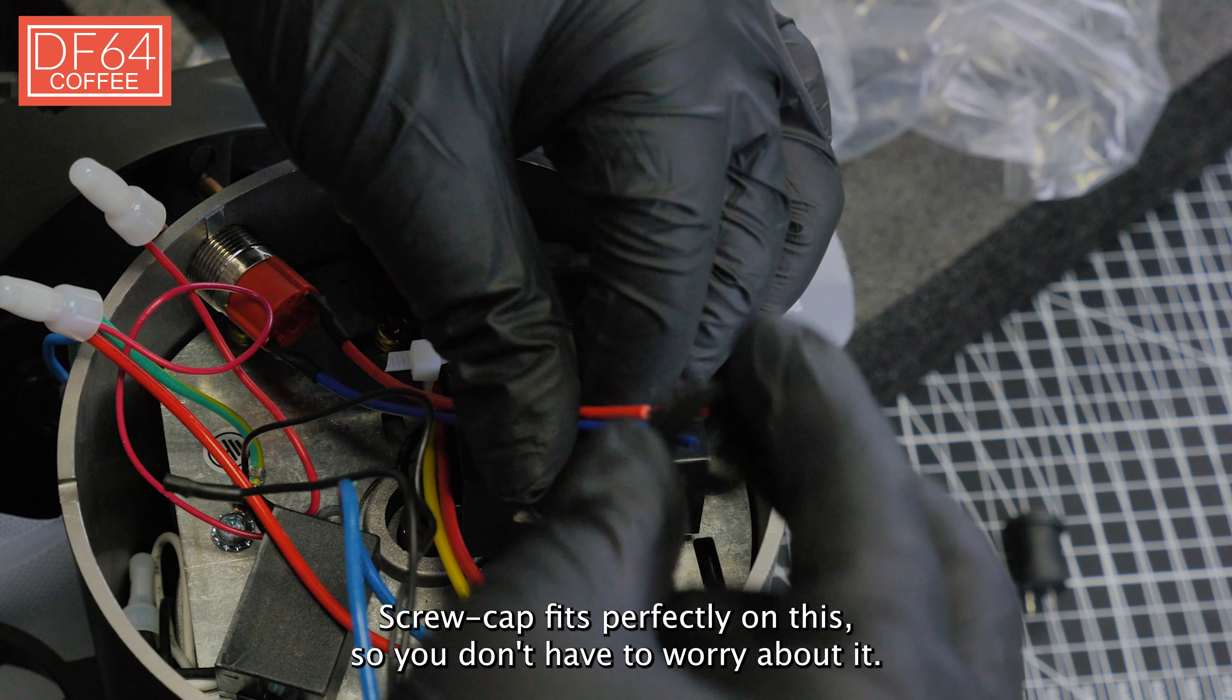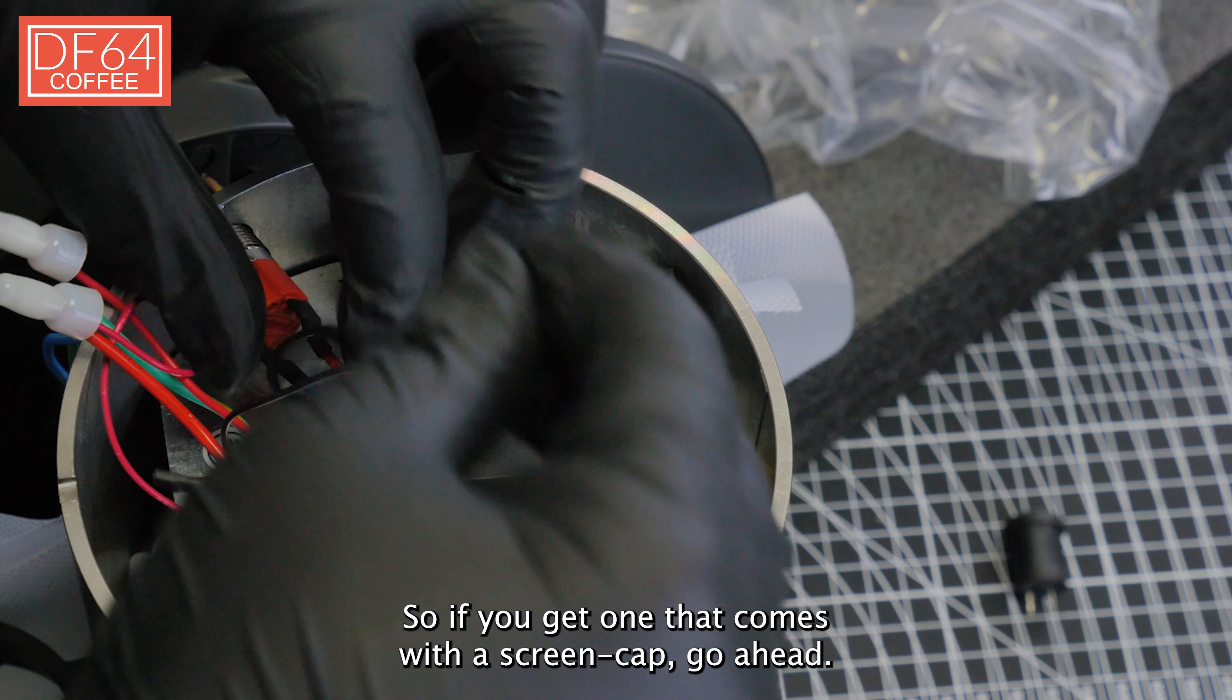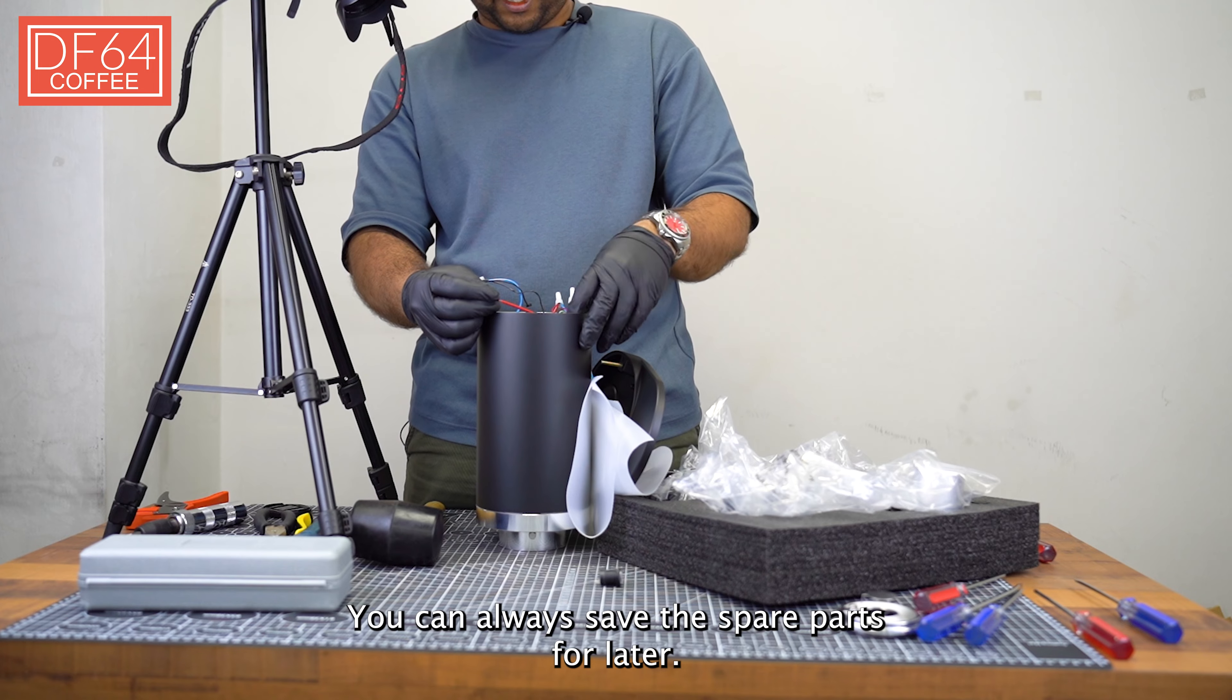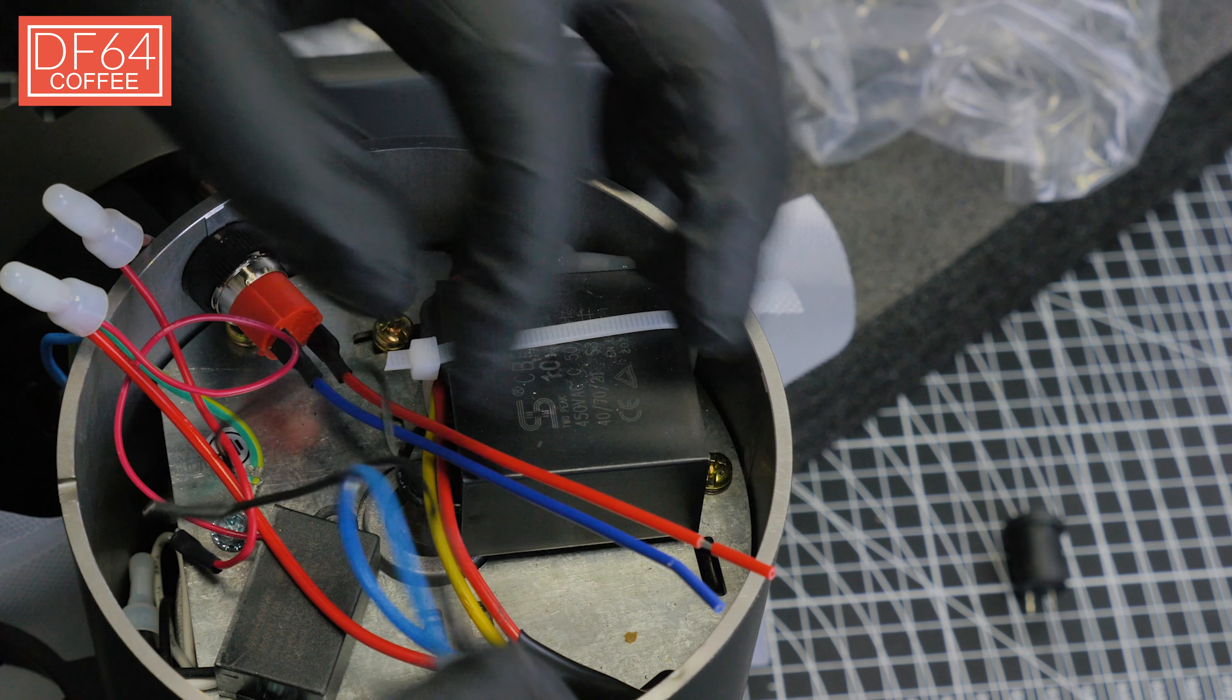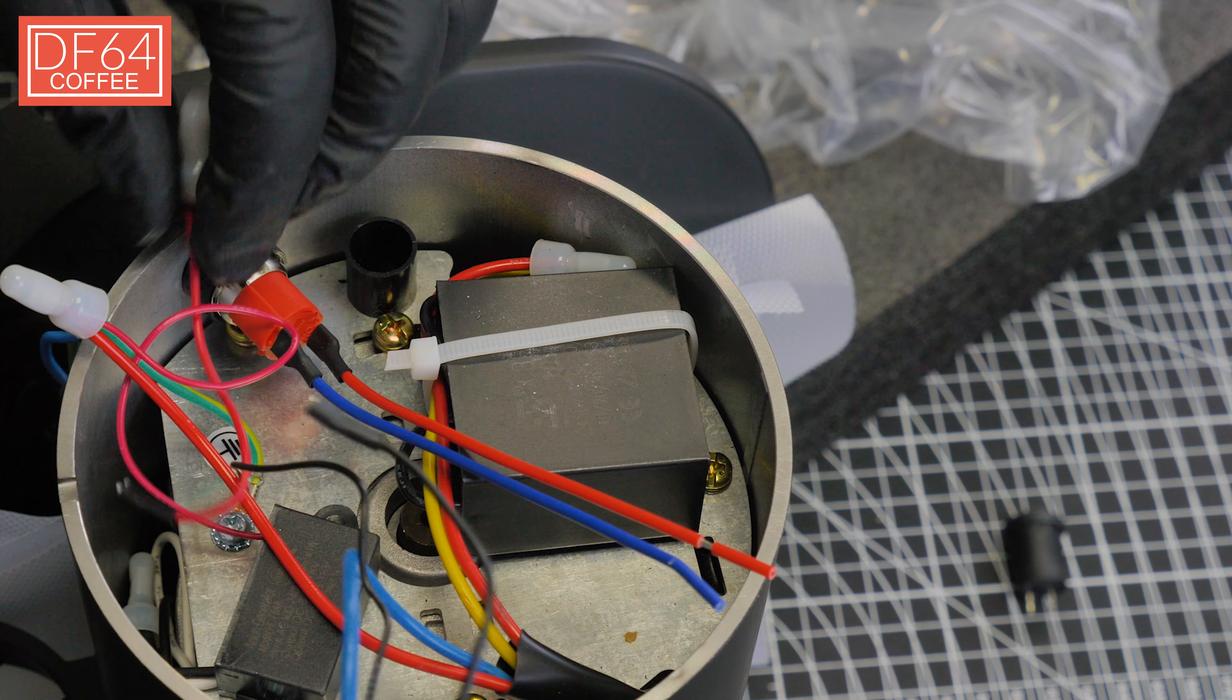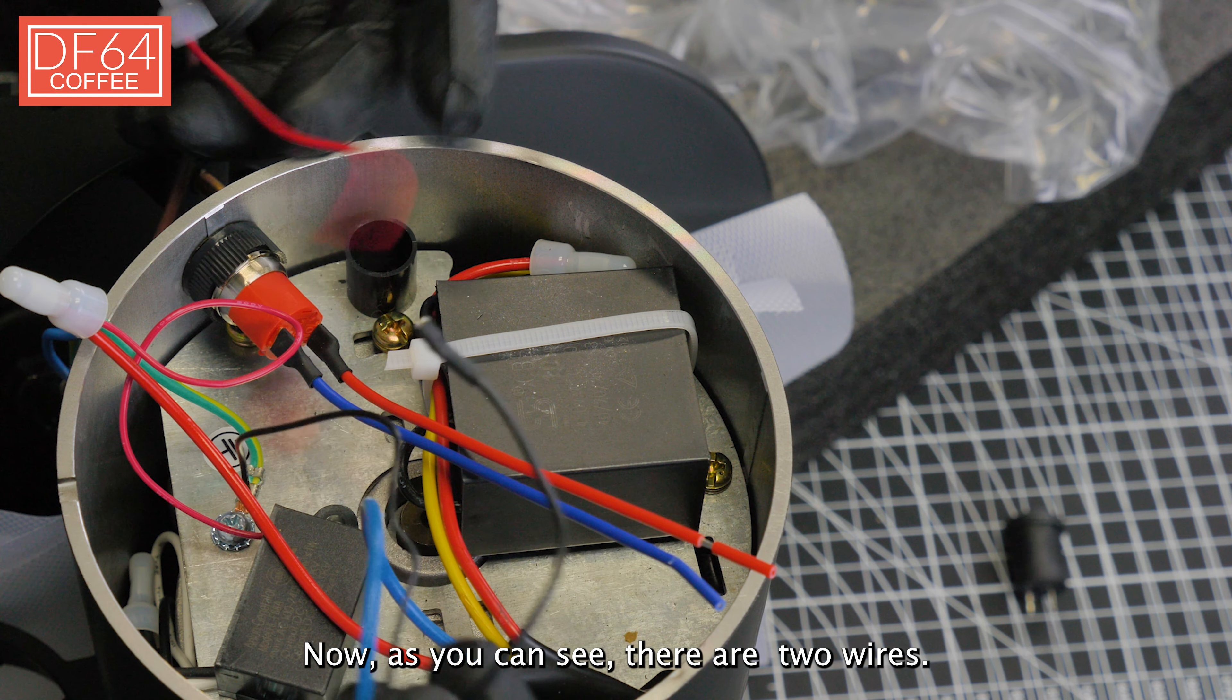Next, unscrew this. Okay, take it out. Install your metal switch. Okay, put that in here. Screw cap fits perfectly on this so you don't have to worry about it. If it comes with a screw cap, sure go ahead and use it as well. You can always save the spare parts for later.